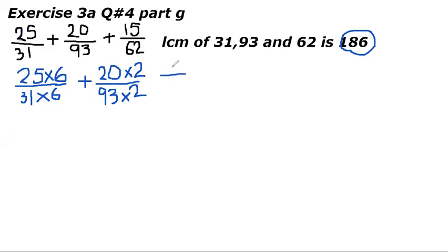The next fraction is 15 upon 62. Now I need to know a number when we multiply 62 with that number it will give us 186 and that number is 3. 62 times 3 equals 186. I need to multiply 3 in the numerator also.